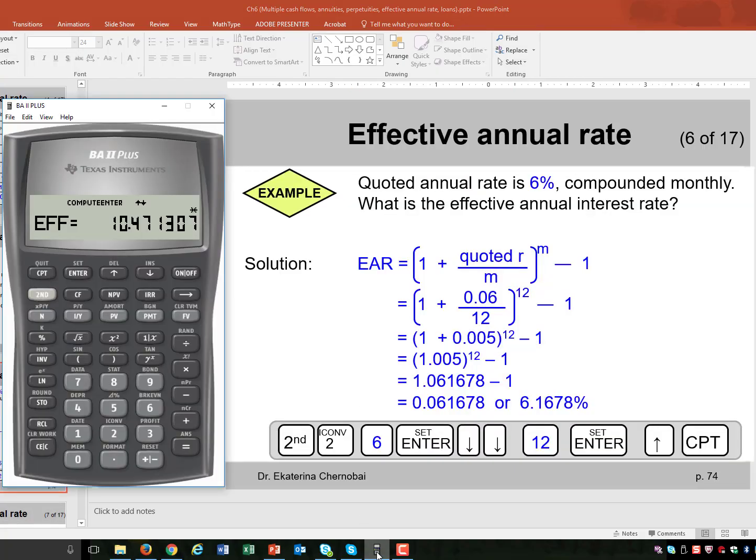In the financial calculator, you do the following. Let's clear everything we had earlier. Second plus minus enter. Let's not worry about changing the decimals, let's leave it at 2.